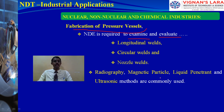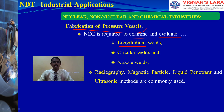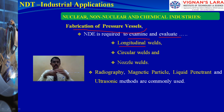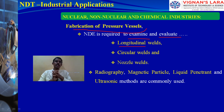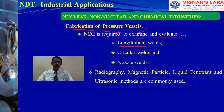For fabrication of pressure vessels, NDT is required to examine and evaluate many things, such as longitudinal welds, circumferential joints, nozzle welds where manhole, pipe openings, or drain openings are connected. For all these, methods such as radiography, magnetic particles, or liquid penetrant may be used to inspect these pipelines and pressure vessels.